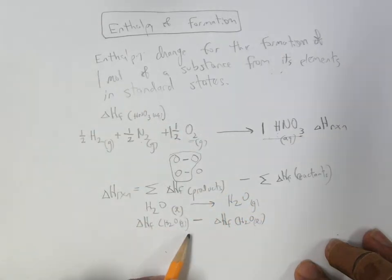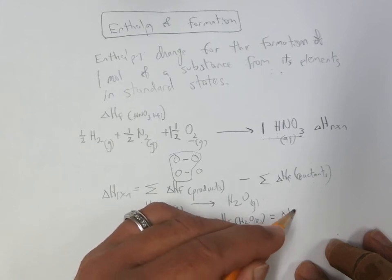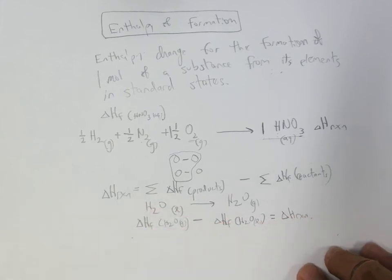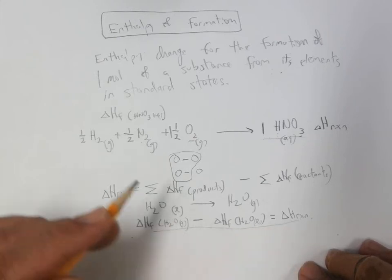Then you would get the delta H for this process. And I'm going to call it delta H of reaction, even though this isn't really a reaction. It's just a phase change. If we can write a chemical equation for it, we can use this equation, heat of formation of products minus reactants.